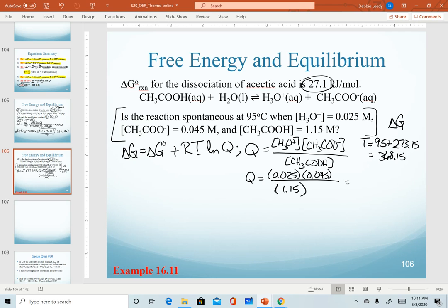When I calculate Q, I'm going to plug in these concentrations. Q comes out to be a value of 9.782 times 10 to the minus 4. Now we have all the values we need to plug everything in. Our setup is going to look like this. We have 27.1 kilojoules per mole for our delta G naught value. We're adding to that our R times T times ln Q. I'm going to convert my R into kilojoules so that it will match the kilojoules of delta G naught, multiplying by our temperature 368.15 and then times the ln Q value.